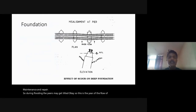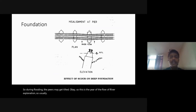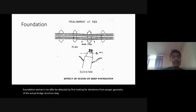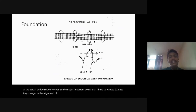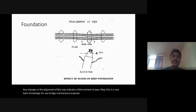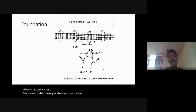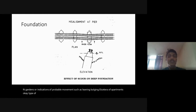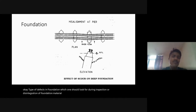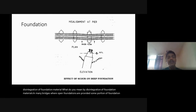Permanent kink in alignment and tilt of pier can occur during flooding. Foundation movements may often be detected by looking for deviations from the proper geometry of the actual bridge structure. Any abrupt changes in the alignment of the bridge may indicate lateral movement of the pier. Also look for inadequate or abnormal clearance between the ballast wall and end girders, or indications of probable movement such as leaning or bulging of abutments.